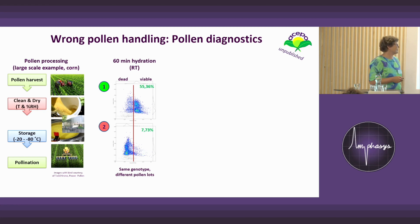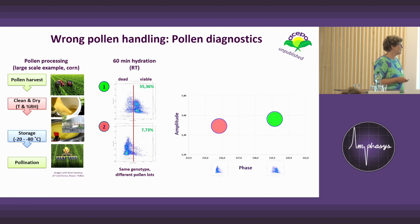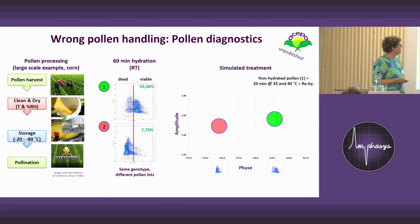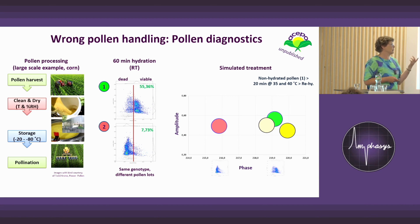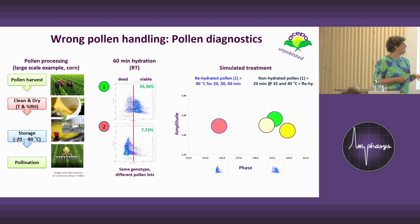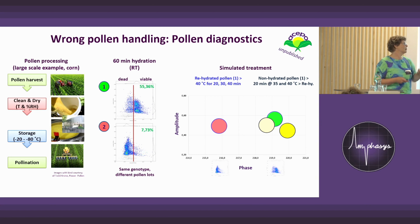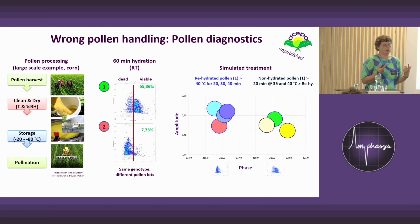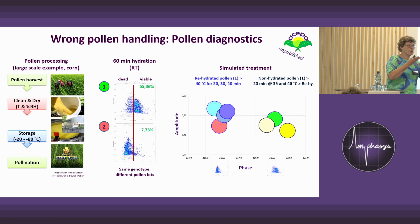So I set up an experiment using just the FACE data from the machine as a single analysis data point, and simulated the treatment. Using sample one, I treated my dry pollen for 20 minutes at 35 and 40 degrees, then rehydrated and measured — they are pretty much unaffected compared to the original. But if I rehydrate them first and then treat at 40 degrees for a few minutes, I am able to reproduce what happened to sample two.